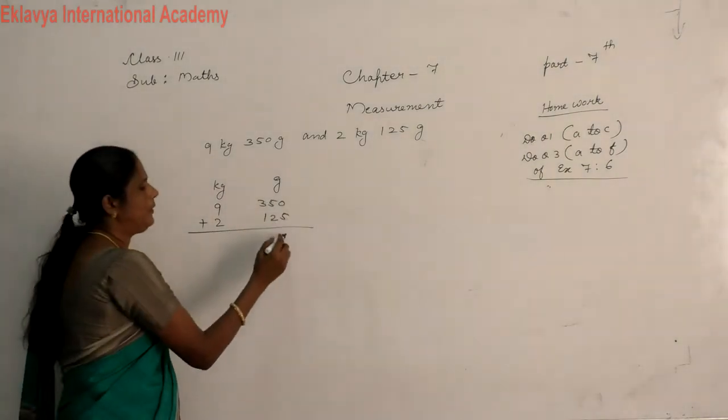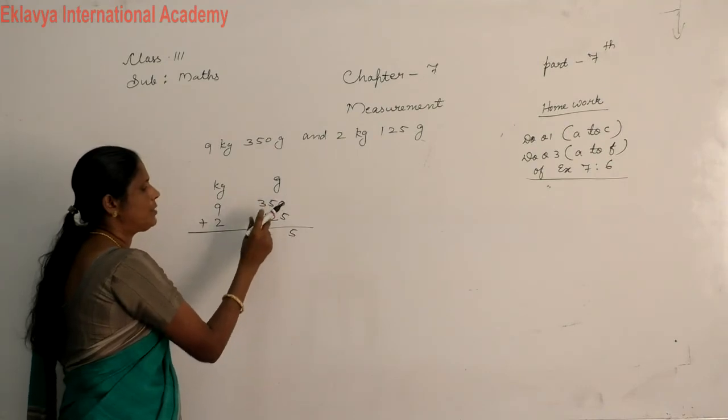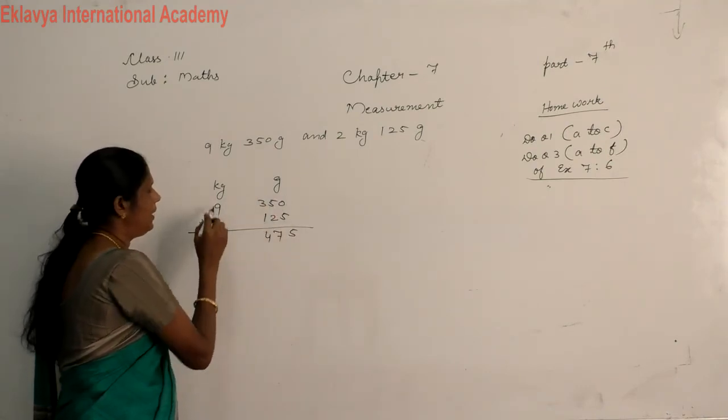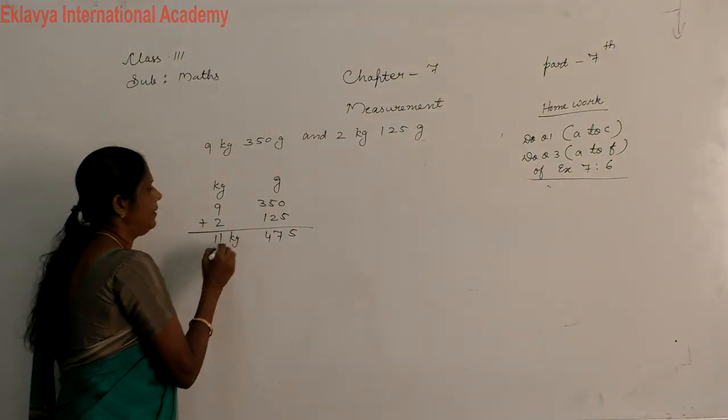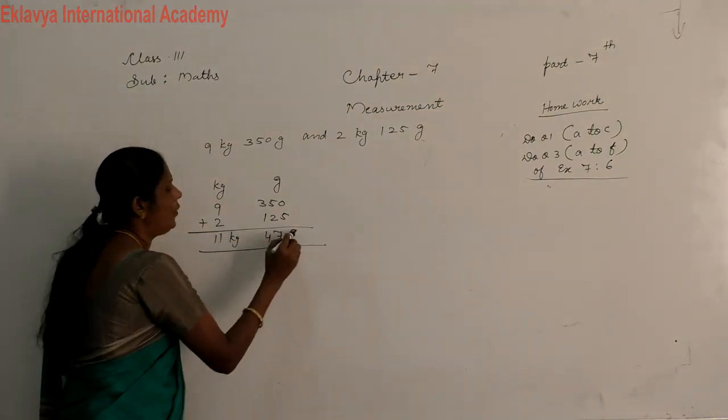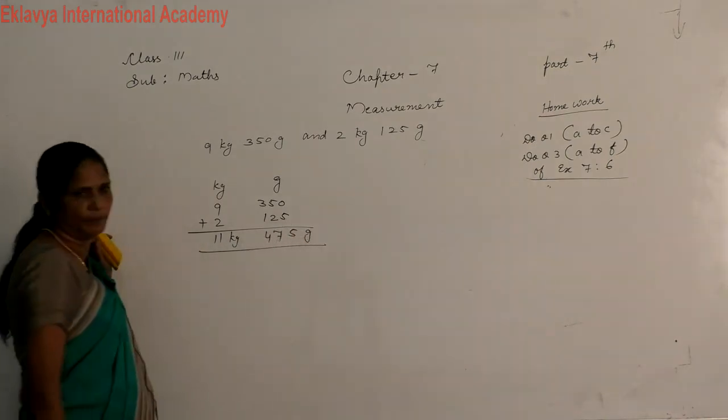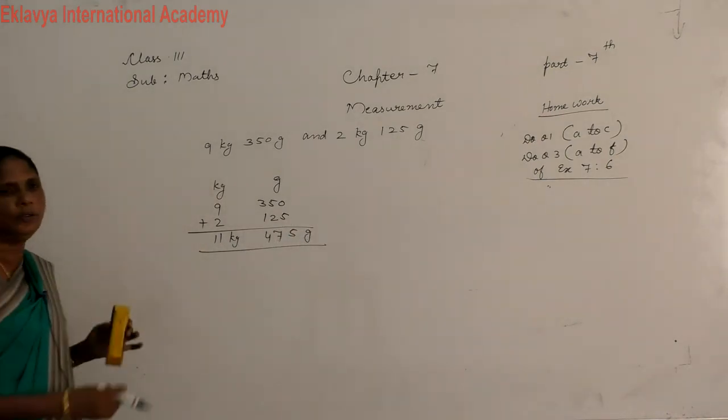Then add this number. 0 plus 5, 5. 5 plus 2, 7. 3 plus 1, 4. Then, 11 kg, then 475 gram. Understanding you?